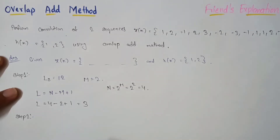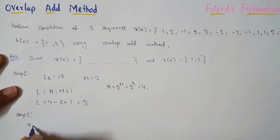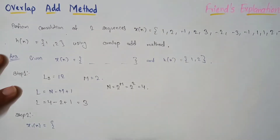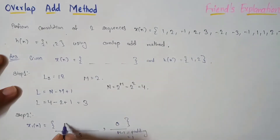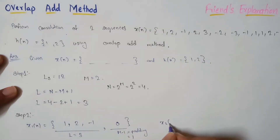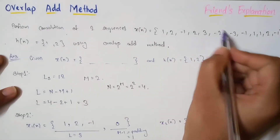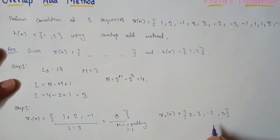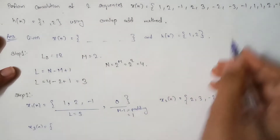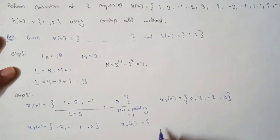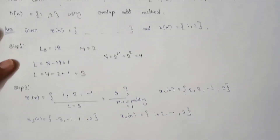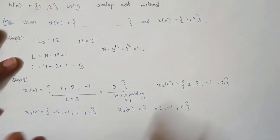In Step 2, we form sub-sequences x1(n), x2(n), x3(n), and x4(n). Each has L = 3 samples from x(n) plus M−1 = 1 zero padding. So: x1(n) = [1, 2, −1, 0], x2(n) = [2, 3, −2, 0], x3(n) = [−3, −1, 1, 0], x4(n) = [1, 2, −1, 0] plus zero padding.